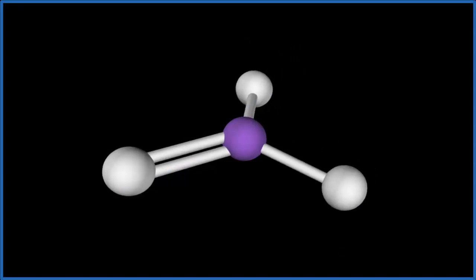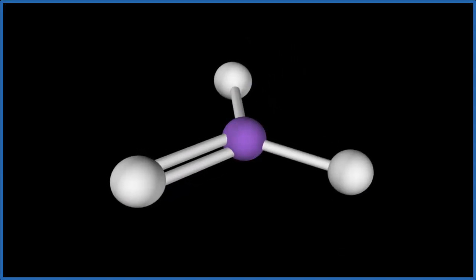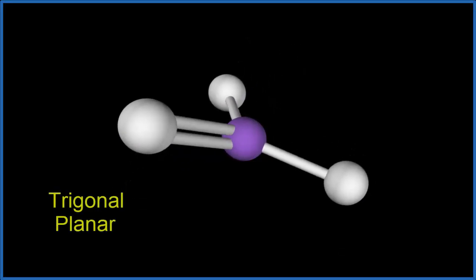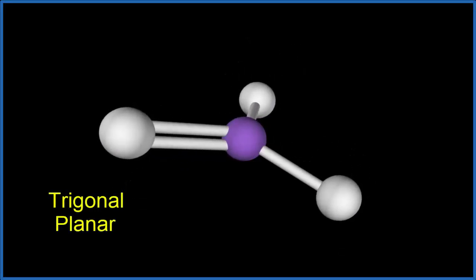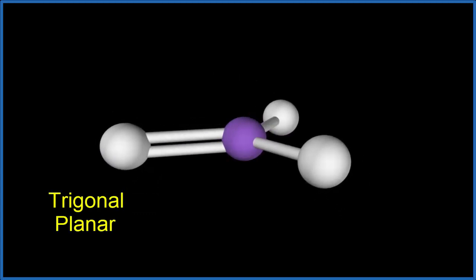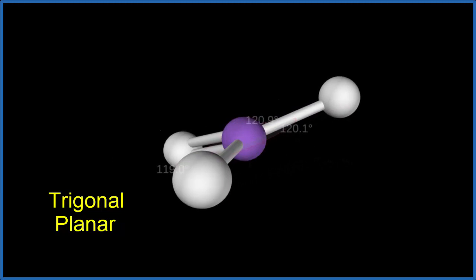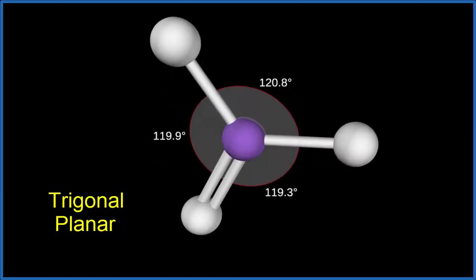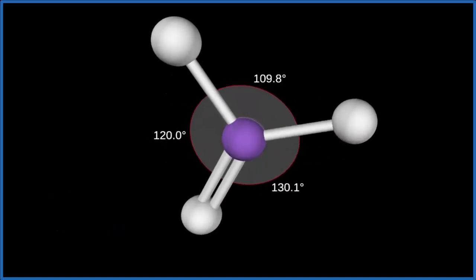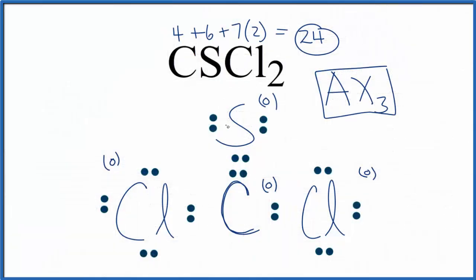We have our three atoms and no lone pairs, giving us this trigonal planar molecular geometry — it's three atoms all in one plane. If you look at the bond angles, they would be 120 degrees, though probably slightly different here because we have different atoms. So this is the Lewis structure for CSCl2, with a trigonal planar molecular geometry.